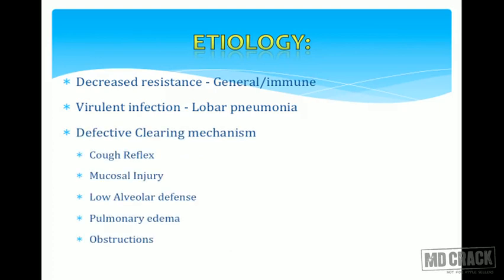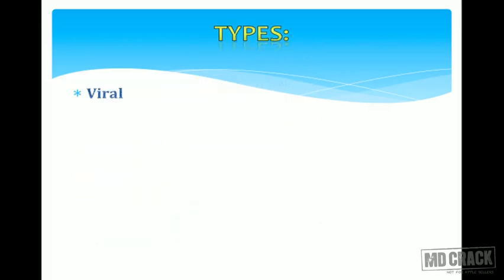What are the causes for the lungs getting infected despite host defenses? It could be because of decreased resistance — either generalized immunosuppression or immunodeficiency status itself, like what happens in HIV and AIDS patients. Sometimes the organisms can be so virulent they can cause lobar pneumonia. It could also be due to defective clearing mechanisms like defective cough reflex, mucosal injury, low alveolar defensive mechanisms, pulmonary edema, or a variety of obstructive lesions within the lung parenchyma.